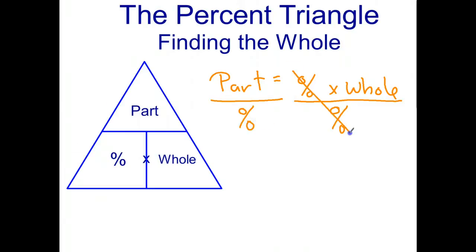The percents cancel out and the whole is left by itself, which I'll write on the left, and that's equal to the part divided by the percent. Looking at the percent triangle, I'm trying to find the whole amount, and it shows me that that's equal to the part divided by the percent. So the triangle basically shows you the three formulas.